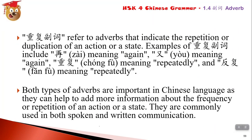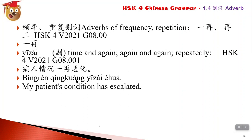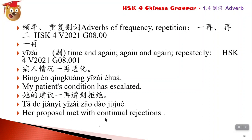一再 means 'again and again' or 'repeatedly.' For example: 病人情况一再恶化 - the patient's condition keeps becoming worse and worse. 她的建议一再遭到拒绝 - her suggestions were refused again and again. 遭到 means 'to suffer,' and 拒绝 means 'to refuse or reject.'